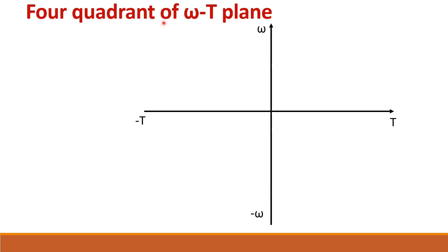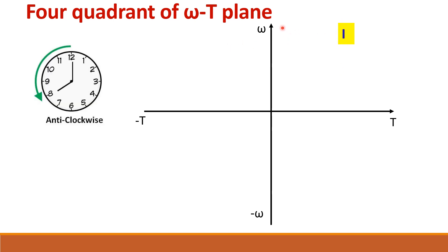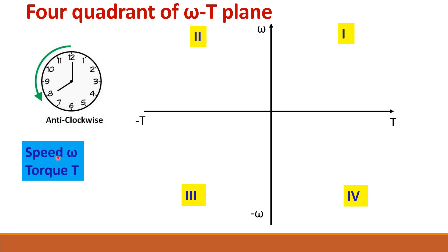Let us see the four quadrants of the speed-torque plane. Speed is taken on the y-axis and torque on the x-axis. Going in anticlockwise direction, we have the first, second, third, and fourth quadrants. Speed and torque in the anticlockwise direction are taken to be positive.